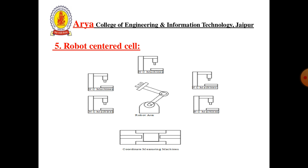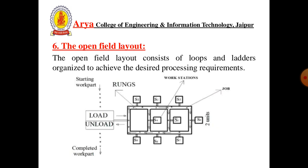Fifth is Robot Centered Cell. If a handling robot is used in a flexible manufacturing system cell, the machine cell layout is called a circular robot centered cell. The NC machine systems are on the left-hand and right-hand sides, and at the center, the robot arm is used to pick the work part from one NC machine and drop it at another. The open field layout consists of two loops and ladders organized to achieve the desired processing requirements.